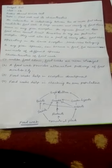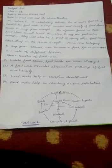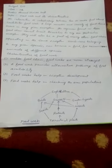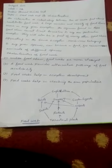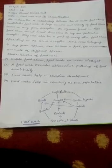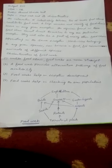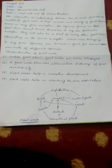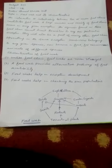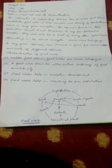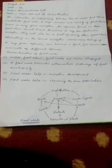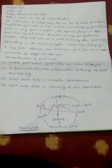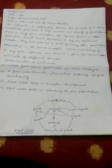Last time I have discussed about food chain, now I will tell you about the related term food web. The interactions or interlinking between two or more food chains constitute food web. A large number and variety of food chains occur in any given ecosystem. The organisms found in these food chains cannot limit themselves to any one particular ecosystem. They will also be a part of many other food chains operating in the same ecosystem.